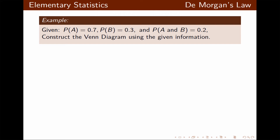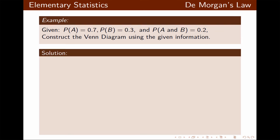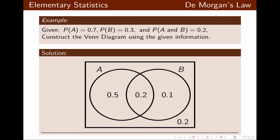Let's look at an example. We're given probability of A, probability of B, and probability of A and B. We want to construct a Venn Diagram using this information. We start with the overlap, which represents probability of A and B, equal to 0.2. We subtract that from 0.7 to get 0.5 for the rest of A, and subtract from 0.3 to get the rest of B. To make the entire Venn Diagram valid, the sum of all probabilities must equal 1, so we place 0.2 outside the circles but inside the rectangle.